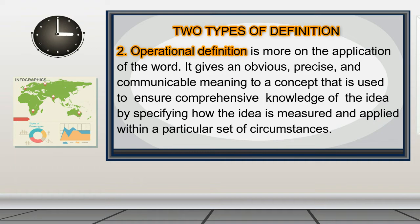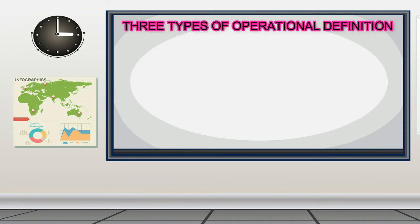The second type of definition is operational definition. Operational definition is more on the application of the word. These may include the various attempts to define or explain a certain process and its properties, including but not limited to the characteristics of the event itself. An operational definition gives an obvious, precise, and communicable meaning to a concept by specifying how the idea is measured and applied within a particular set of circumstances.